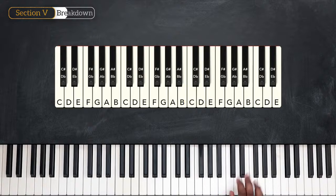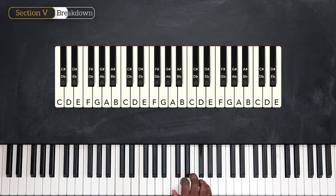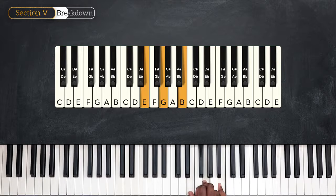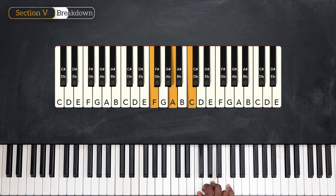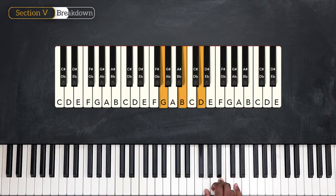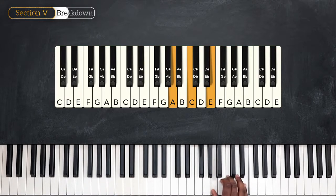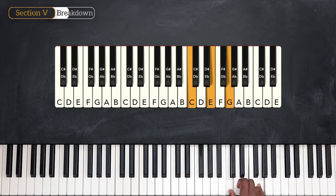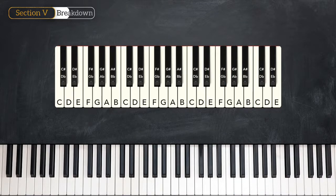And then next we're back on C. So now we know that C is major, D is minor, E is minor, F is major, G is major, A is minor, and the last one, B, is a diminished chord. So now I've demonstrated the formula for the chords in the major scale: major, minor, minor, major, major, minor, and diminished.